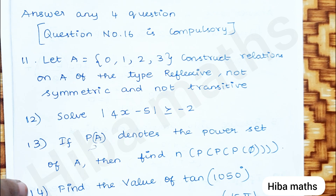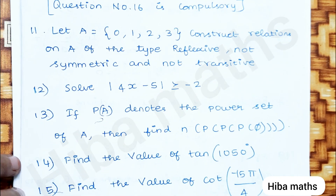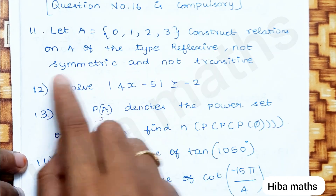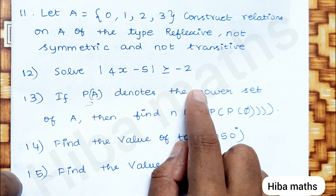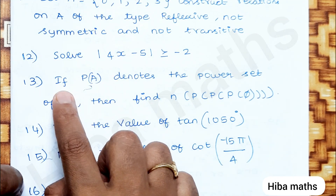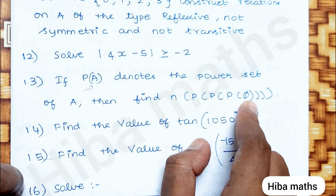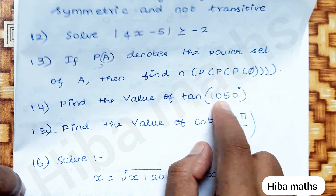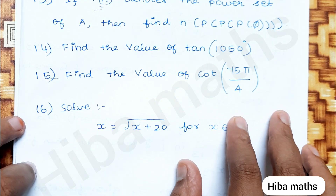But in the book, you can read and review. Question 11: Construct a relation on a set that is reflexive, not symmetric, and not transitive. First lesson: Solve modulus — plus one minus one. If P(A) denotes the power set of A, then find n(P(P(P(null set)))). Find the value of tan 1050 degrees — make sure to mark that one.